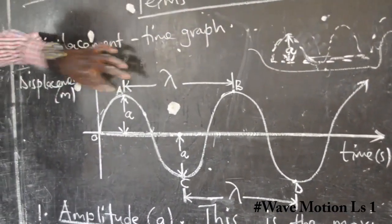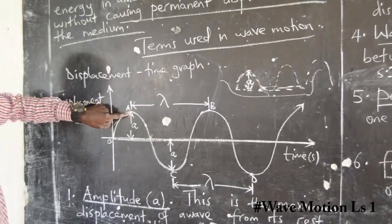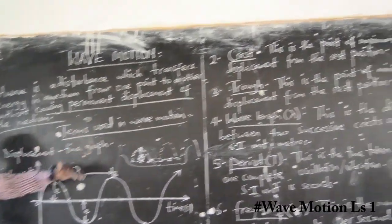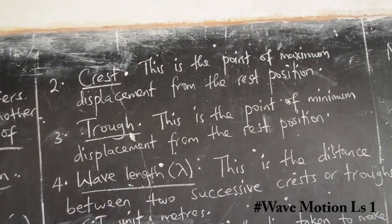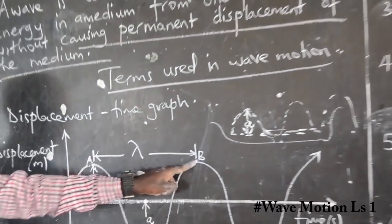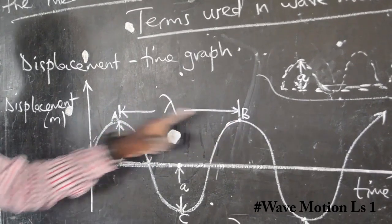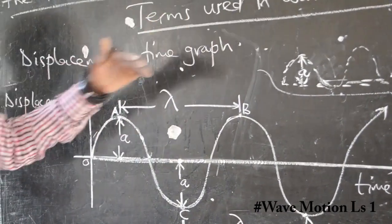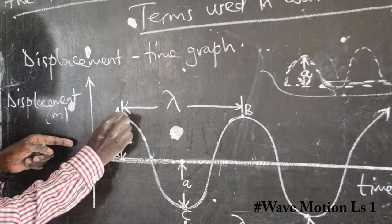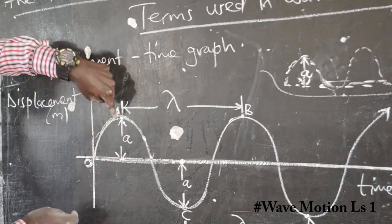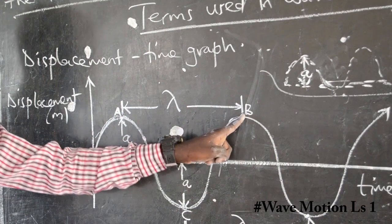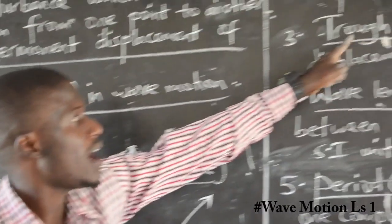Now we can look at what we call a crest. Looking at our diagram, you can see points capital A and capital B — these are the crests. A crest is the point of maximum displacement from the rest position; this is the point which forms a hill shape. These points at the top of the wave are the crests. Because if the rest position is zero and the particles are displaced upward, this point of maximum displacement is what we term a crest.